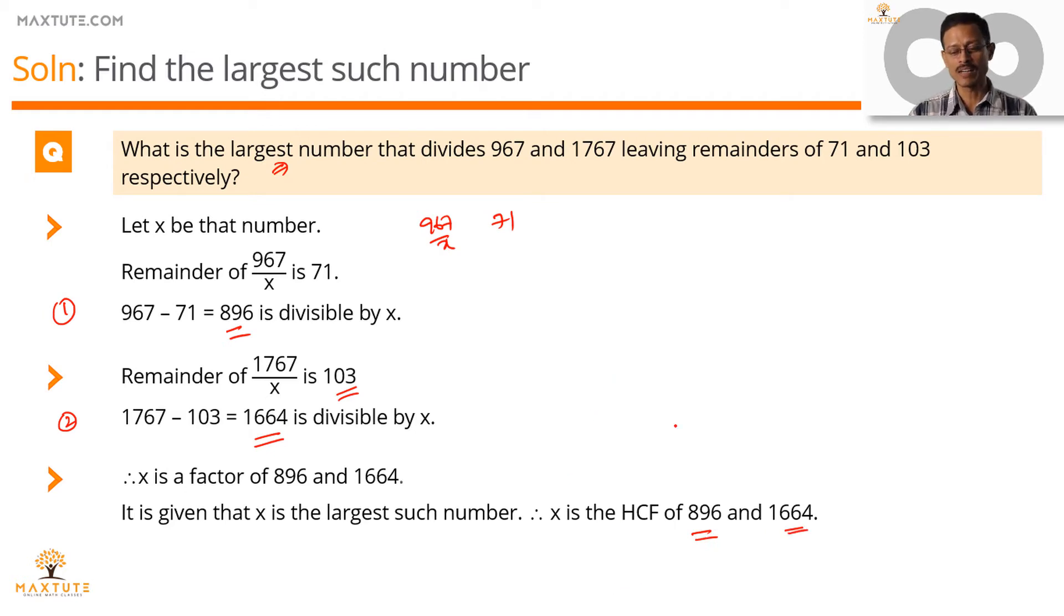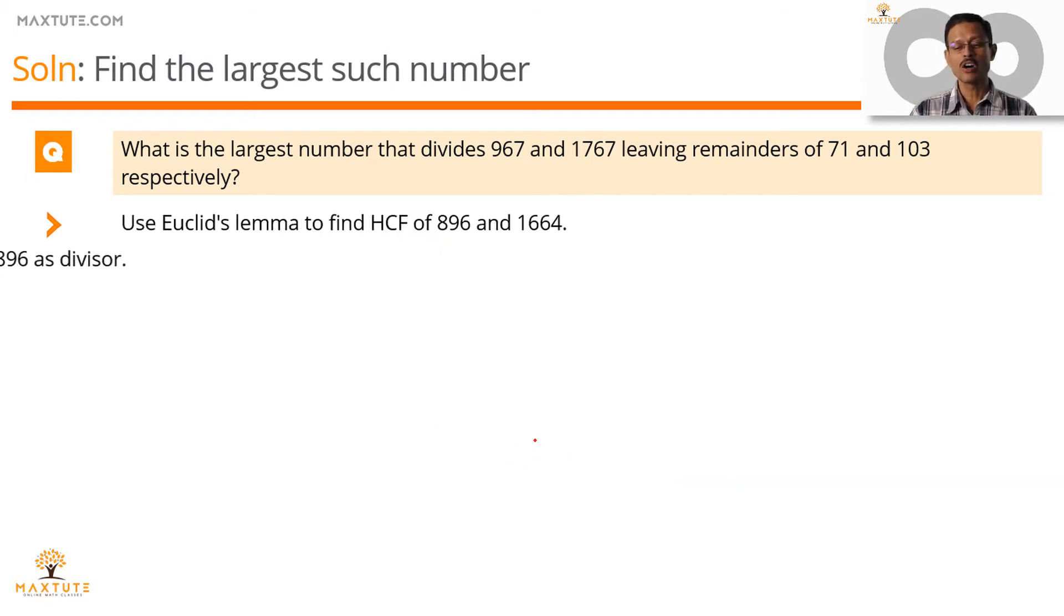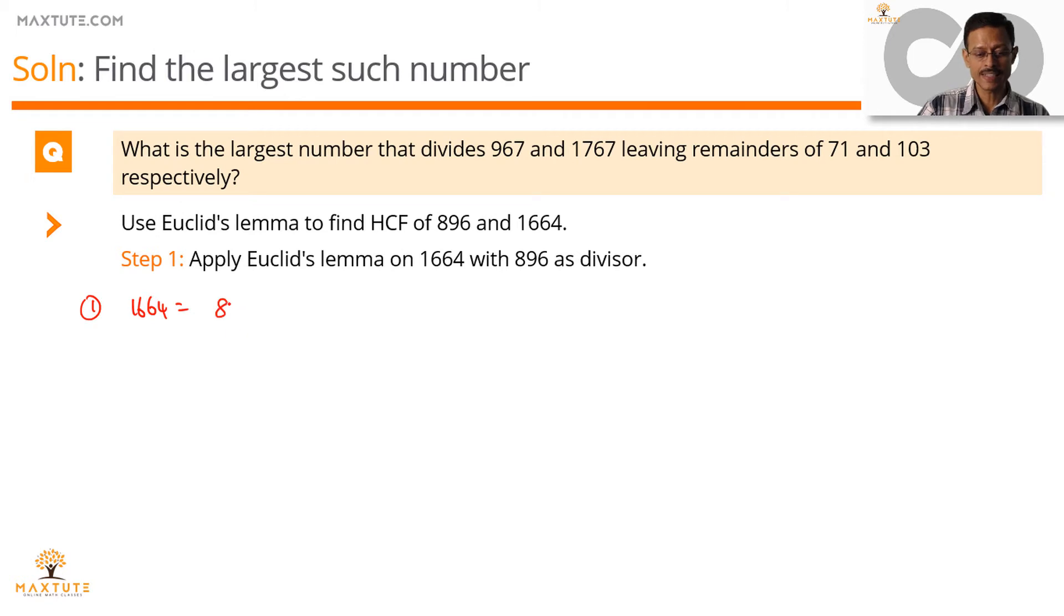We'll apply Euclid's Lemma now to find this. This is a process we have done it over and over again. Just quickly run through it. We're going to be applying the Lemma on 1664 with 896 as the divisor. So, 1664 step 1 is equal to 896 into 1 plus a remainder which is equal to 768. The remainder is non-zero.